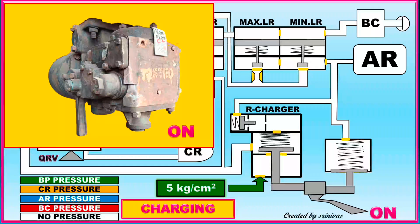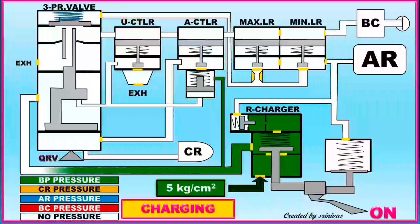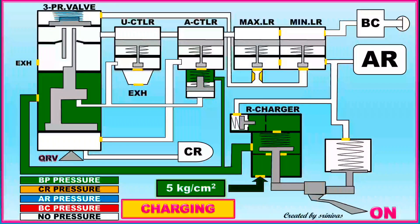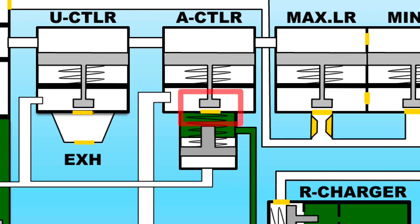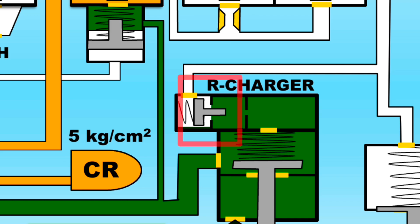If the handle of the DV is vertical to the ground, then it is in the on position. In this position, the AR exhaust path closes and BP pressure gate opens through the charger. Then BP pressure enters into the DV. The controller's path is open, so BP pressure passes into CR via the A controller, and BP pressure is converted into CR pressure via the A controller.